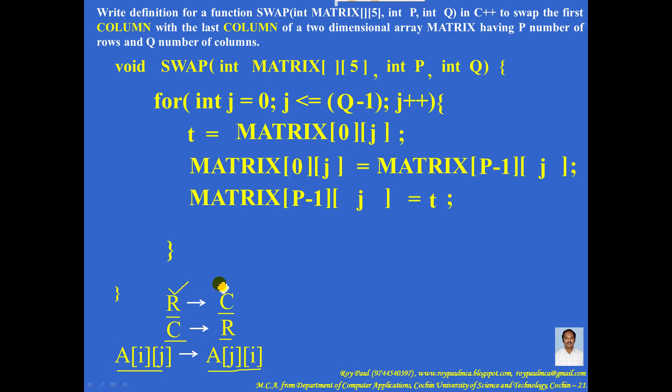Here number of rows is P, number of columns is Q. So P becomes Q, Q should become P, and matrix of IJ should become matrix of JI.